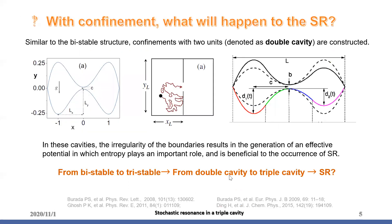When considering systems with confinement, is there still SR? If yes, how does the confined structure affect the SR? Related studies started in 2008 by Brada. Results indicated that the irregularity of the boundaries results in the generation of an effective potential and then induced SR.